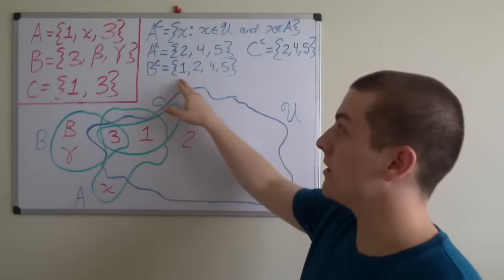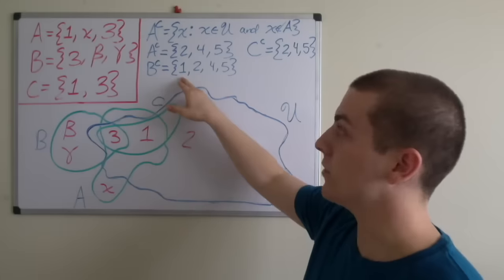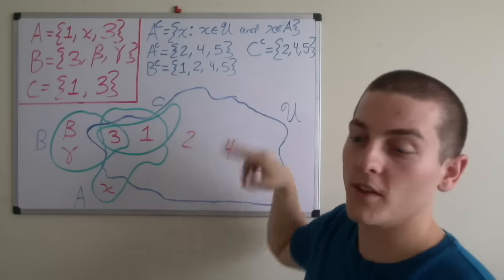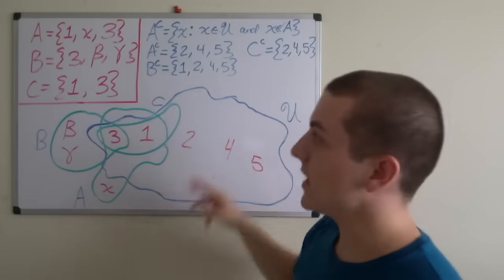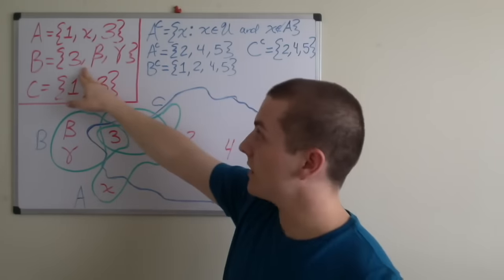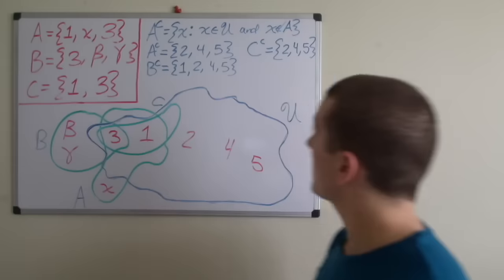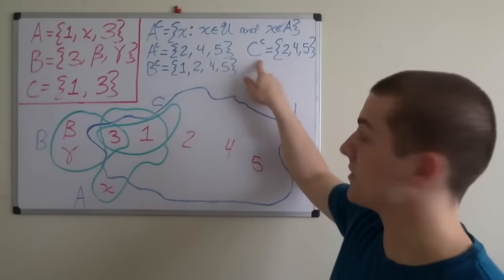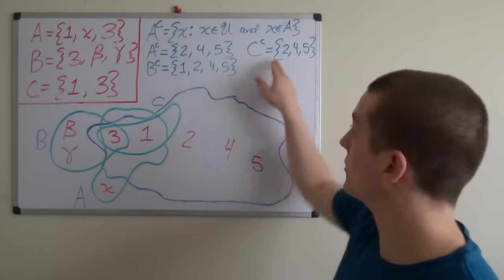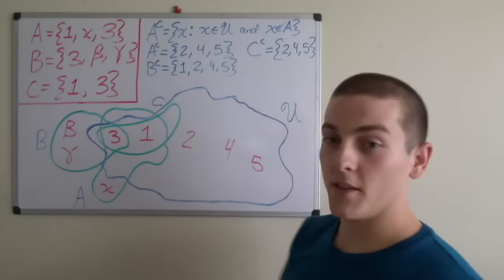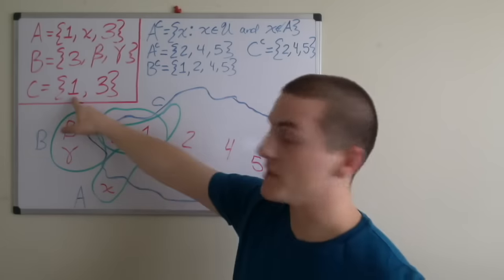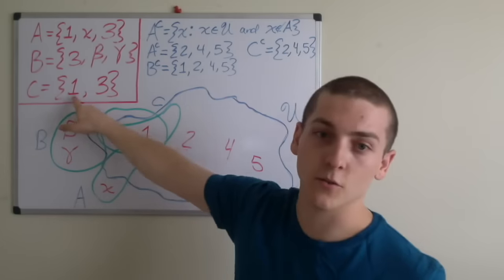Next, we have B complement. We know that 1, 2, 4, and 5 are within the universe and they're not within B. And lastly, we have C complement: 2, 4, and 5 are within the universe and they're not within C, because we had to exclude 1 and 3.